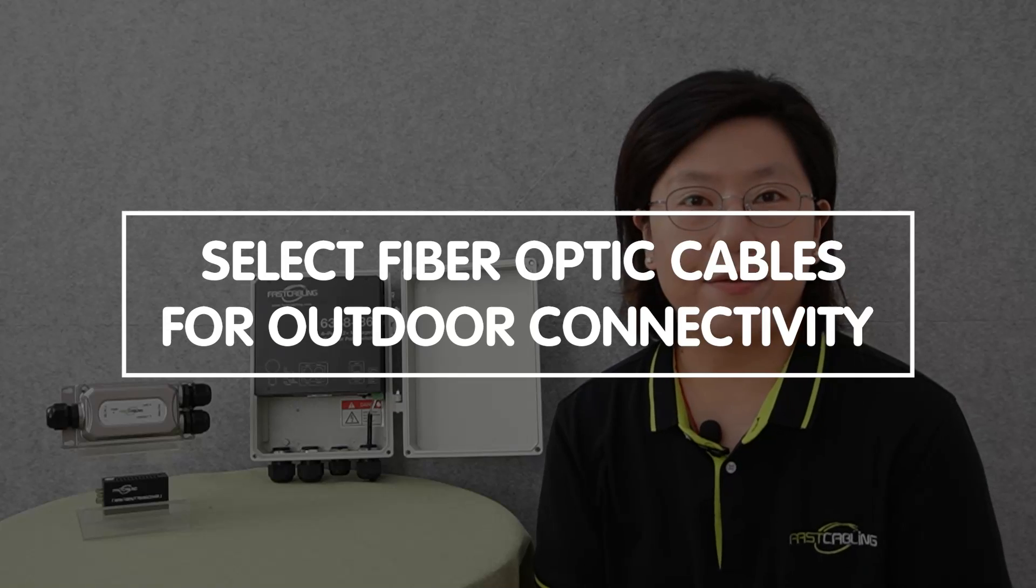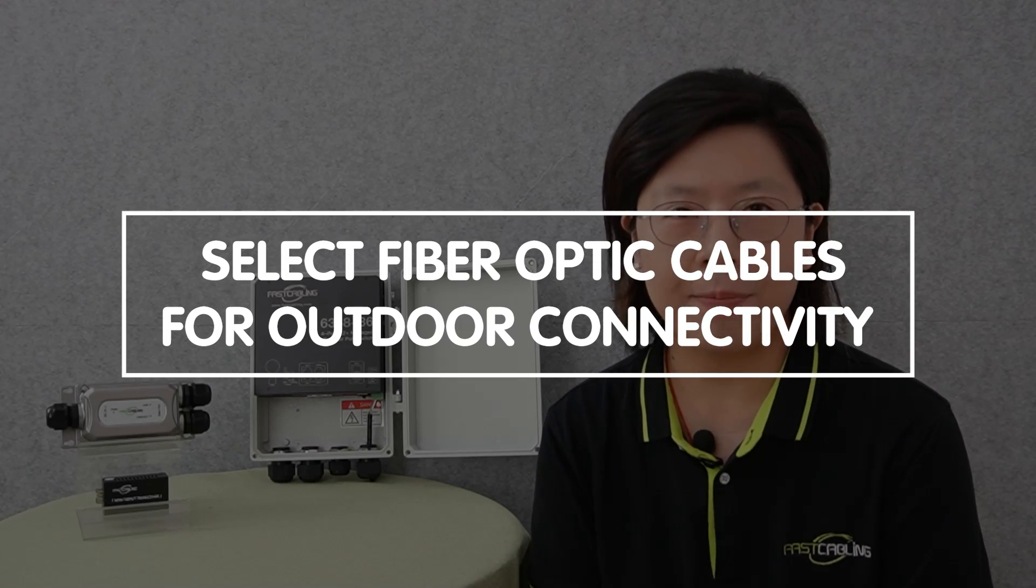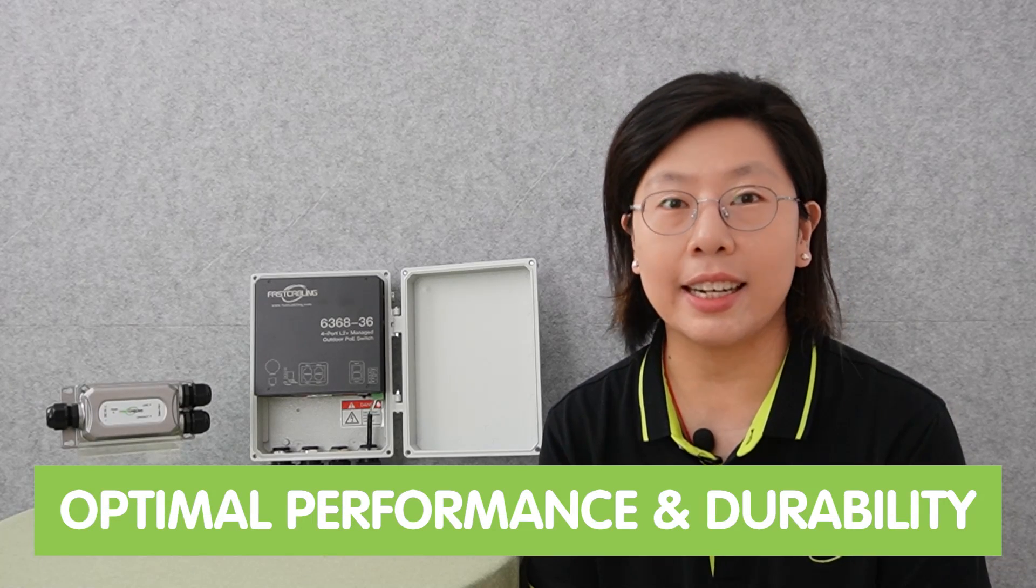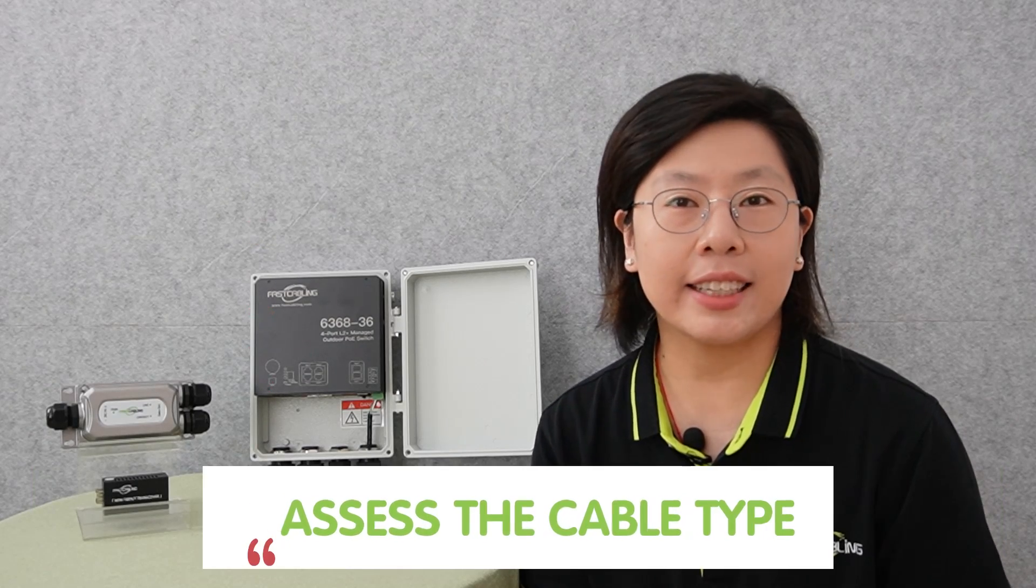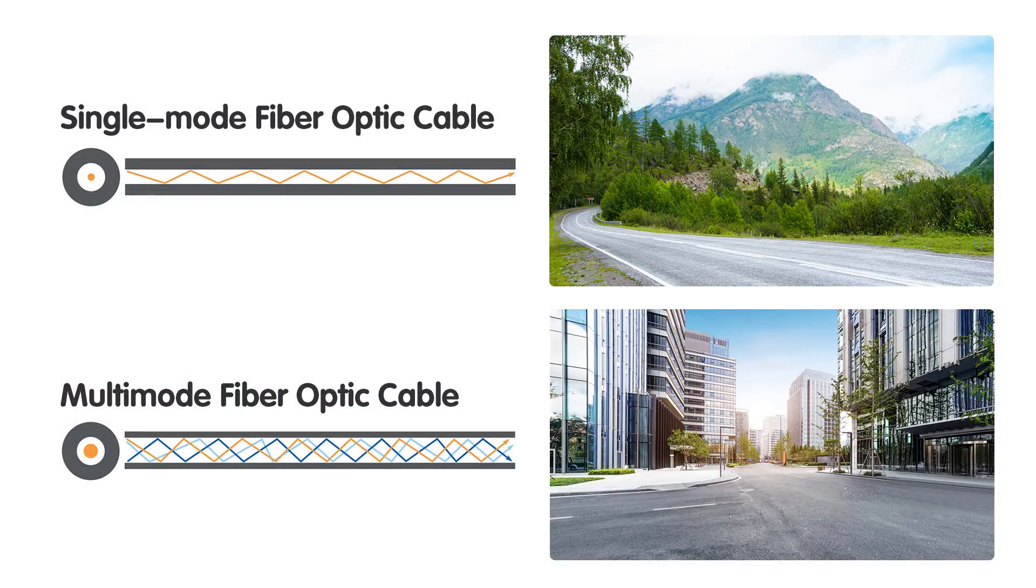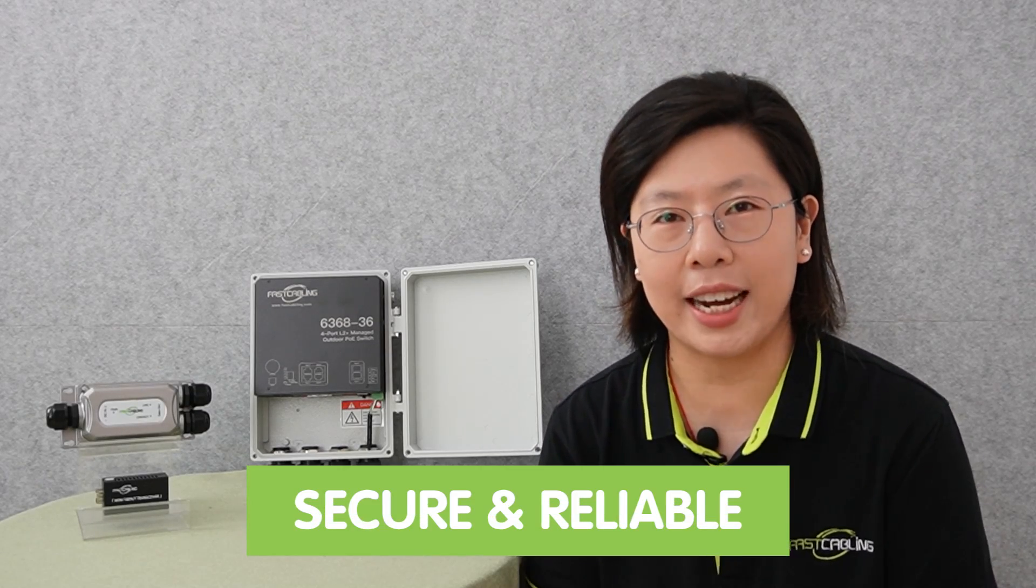When selecting fiber optic cable for outdoor connectivity, it is crucial to consider several factors to ensure optimal performance and durability in challenging environments. First, assess the cable types, choosing between single-mode and multi-mode based on your specific requirements. Single-mode fiber is suitable for long-distance transmission, while multi-mode is ideal for shorter distances.